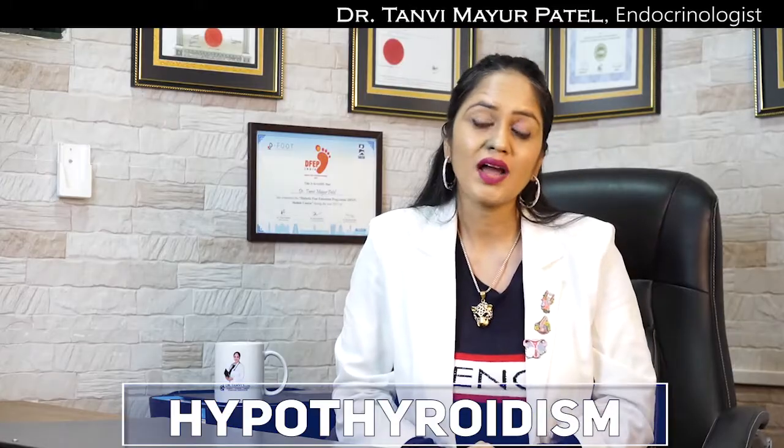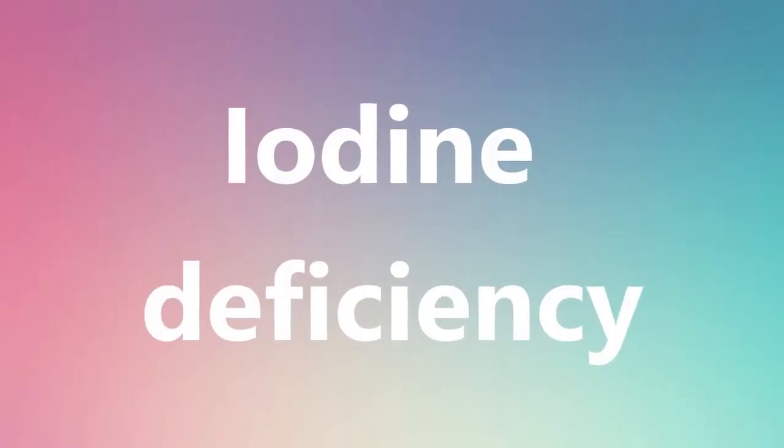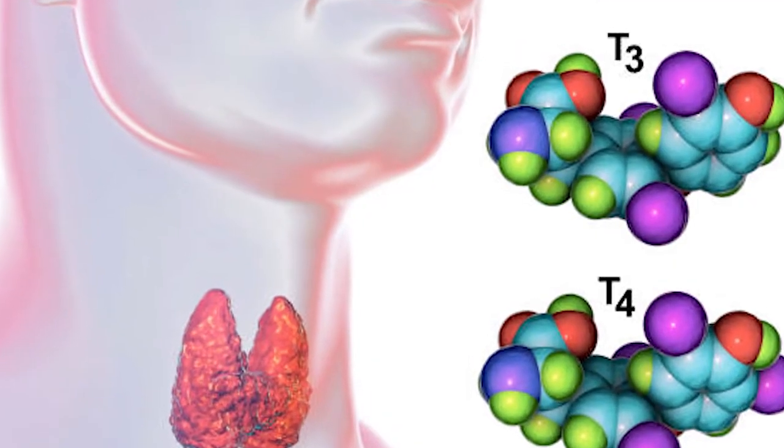The second reason for hypothyroidism is iodine deficiency. Iodine is one of the very important micronutrients. We need the right balance of iodine so that your thyroid gland makes the right amount of T3 and T4 hormone. So if for any reason you are getting low iodine, this can also cause hypothyroidism.